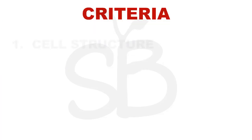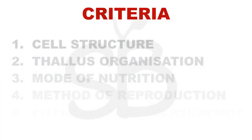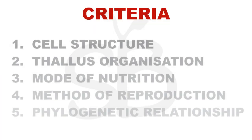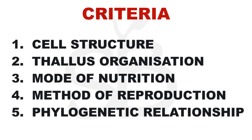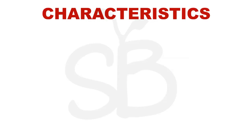This is the five kingdom classification. Here are the criteria: cell structure, thallus organization, mode of nutrition, method of reproduction, and phylogenetic relationships.